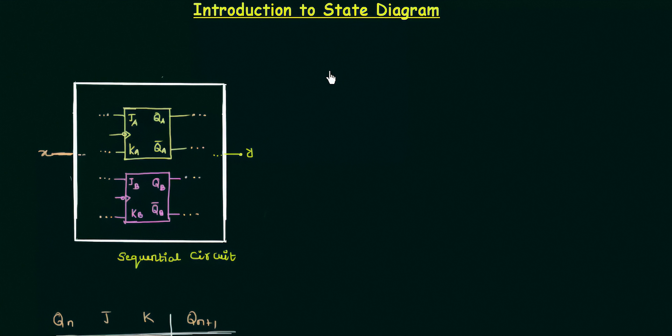I am having a sequential circuit on the left hand side of my screen and it is actually not a complete sequential circuit because I have not shown the internal circuitry, and it is not required at this point of time because you have to learn the basics of state diagram. In this you can see there is one input x, two flip flops are used — both of them are JK — and one output y is there.